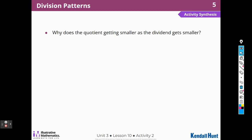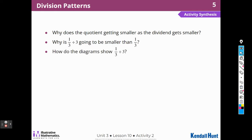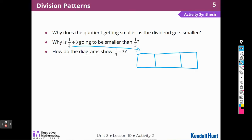Why does the quotient get smaller as the dividend gets smaller? There are a smaller number of things being split into the same number of groups, so there will be fewer in each group. Why is 1 third divided by 3 going to be smaller than 1 third? Because I'm taking that 1 third and dividing it into thirds — that's 1 third of 1 third. The diagrams show we divide 1 third into 3 equal parts, and we know that's going to be 1 out of 9, which is 1 ninth.